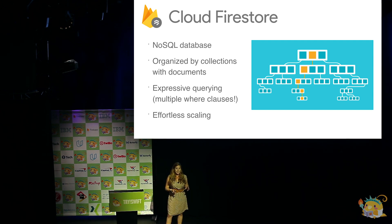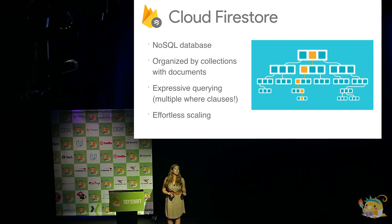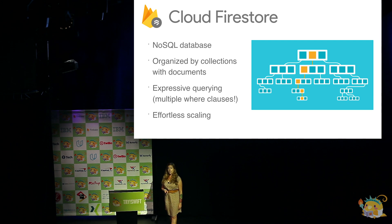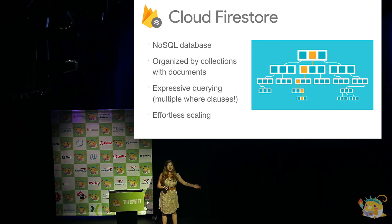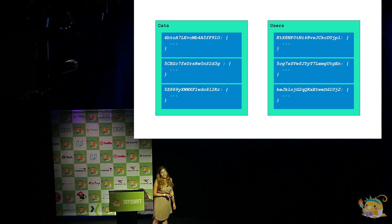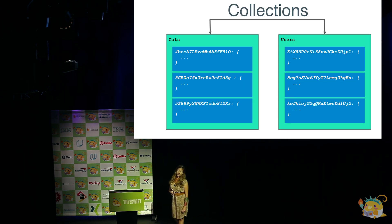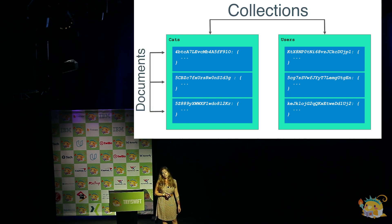Just briefly, here are some different things you can store: text strings, datetime, integer, booleans, bytes, maps, arrays, and sub-collections. As a side note, there's almost no reason to store an array — it's better just to have it as a map. I had two collections, one for cats and one for users, each containing a bunch of documents. The keys for the cat documents are random IDs; for users it's their user ID.